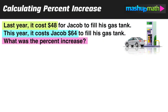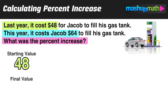Let's look at the second practice problem. Last year it cost $48 for Jacob to fill up his gas tank; this year it cost $64. What was the percent increase? Just like the last example, we identify the key information: the starting value is $48 and the final value is $64, and we'll use the three-step method to find the percent increase.